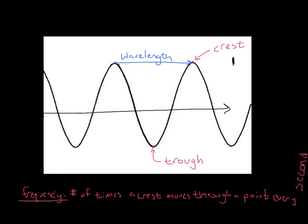The definition for frequency is the number of times a crest moves through a point every second — time it for one second and count how many times those crests move through that point right there. That would be the frequency.